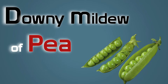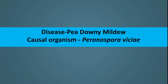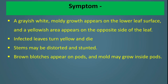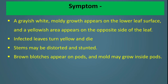Downy Mildew of Pea. Downy Mildew of Pea is caused by the fungus Peronospora sp. Symptom: Grayish white mold growth appears on the lower leaf surface, and yellow areas appear on the opposite side of the upper leaf. Infected leaves turn yellow and die. Stems may be distorted and stunted. Brown blotches appear on pods, and molds may also grow inside the pod.